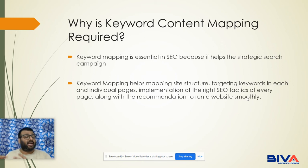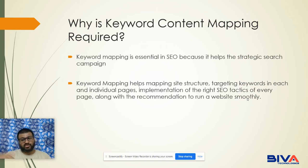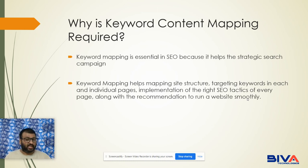Keyword mapping is essential in SEO because it helps the strategic search campaign — whether organic or paid. You will have to focus on strategy first because it helps map site structure, target keywords to each individual page, and implement the right SEO tactics on every page along with recommendations to run a website smoothly.